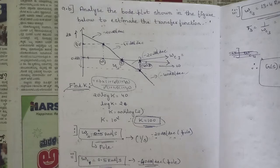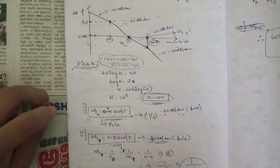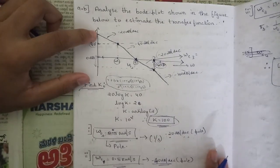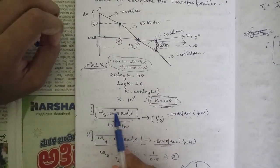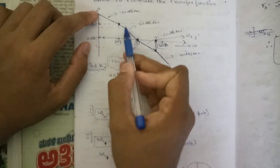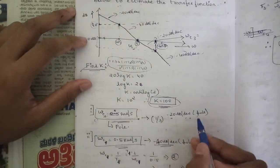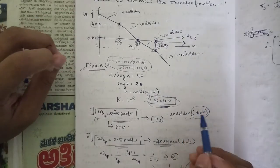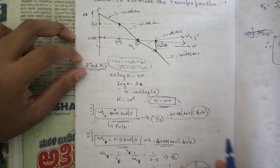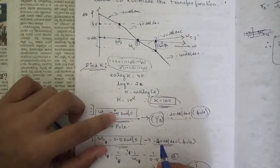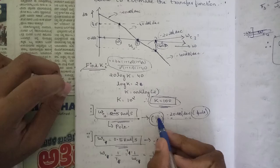Now we find the corner frequencies. Since the slope starts changing from 0 radian per second, the first corner frequency is 0 rad/s. The slope changes to minus 20 dB per decade from this point, so we conclude it is a pole — since a pole gives minus 20 dB per decade change and a zero gives plus 20 dB per decade. Because it is at 0 rad/s, there is no T value, so it is simply 1/s.